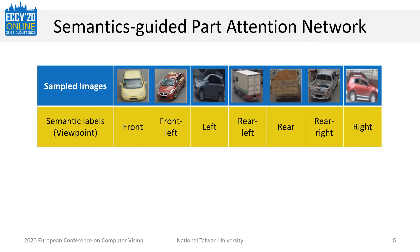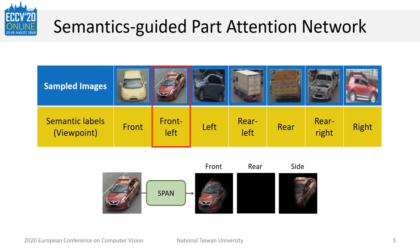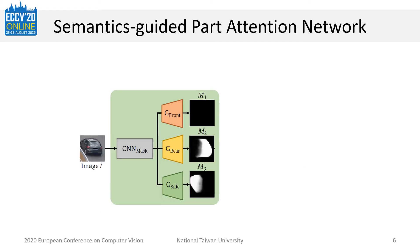In the vehicle reidentification problem, the image-level semantic label is the viewpoint of the image. For example, the network only needs to know that the front and left faces are visible, and can learn to localize where they are. SPAN is composed of one shared feature extractor and several independent mask generators to produce the mask of each part. In our task, we have three generators to respectively generate the front, rear, and side view masks.